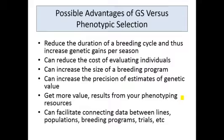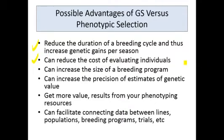Here are some of the possible advantages of genomic selection versus phenotypic selection. One of the largest advantages is it can reduce the duration of a breeding cycle, and that can increase your genetic gains per season. It can reduce your cost of evaluating individuals, and therefore increase your efficiency relative to dollars spent. It can effectively increase the size of your breeding program by allowing you to evaluate more individuals based solely on genotype than you can possibly do by phenotyping.